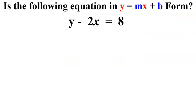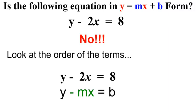Take a look at the equation on the screen: y minus 2x equals 8. Is that equation written in y equals mx plus b form? No, it's not. And if you look carefully at the terms, you can see that the y is not by itself. In order to have y equals mx plus b, there needs to be an equal sign after the y. And you can never move an equal sign in math. It has to stay where it is.